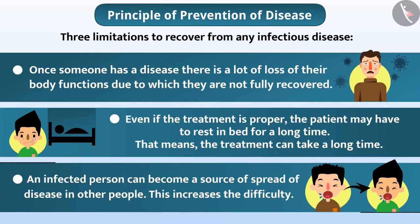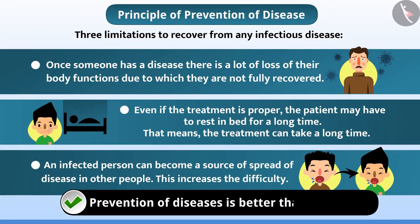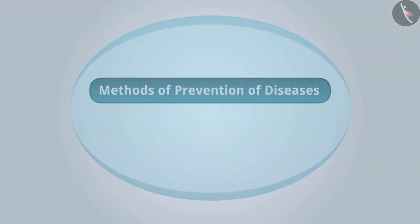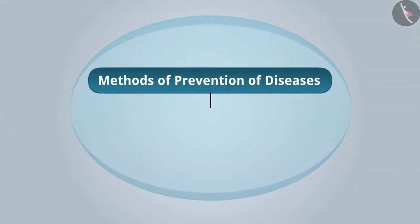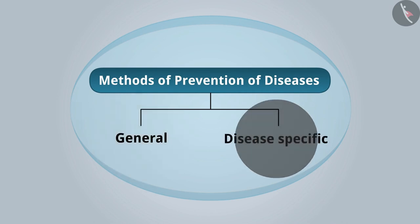Therefore, prevention of diseases is better than treatment. Now let us see what is the principle of prevention of diseases. There are two methods of prevention of diseases: general and disease-specific.